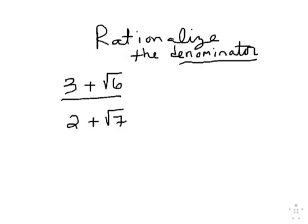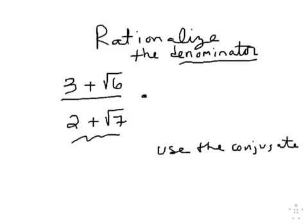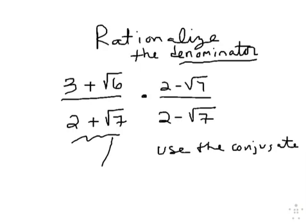And last but not least, rationalize the denominator. You have a binomial in the denominator here. So when you have a binomial, note to self, use the conjugate. So we got whatever we do to the bottom, we do to the top. So we're going to multiply by two minus root seven on bottom, two minus root seven on top. Rationalize the denominator is a fancy way of saying, get this radical out of the denominator in a legal way. So make the radical vanish in a legal way. And the only way to do that is with using the conjugate and some foil here.